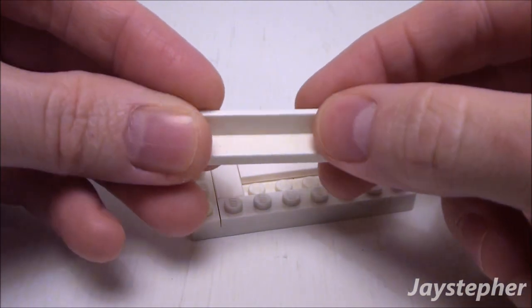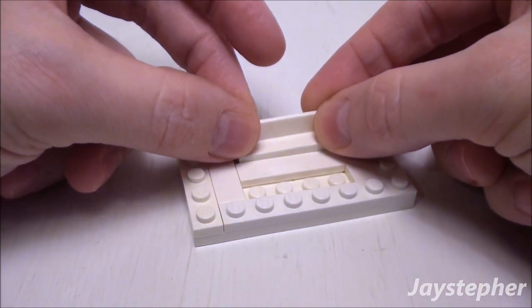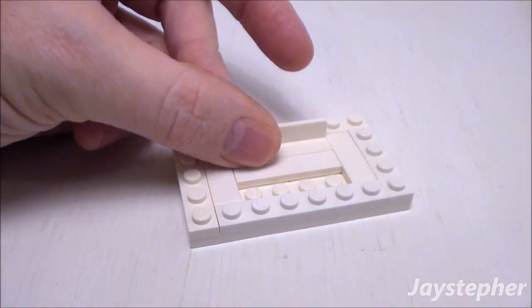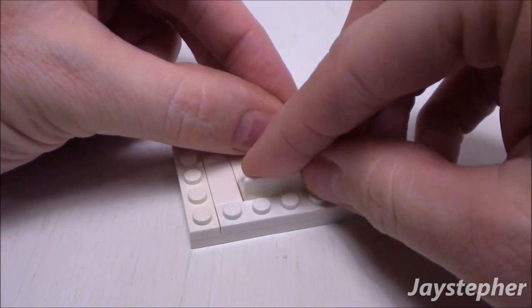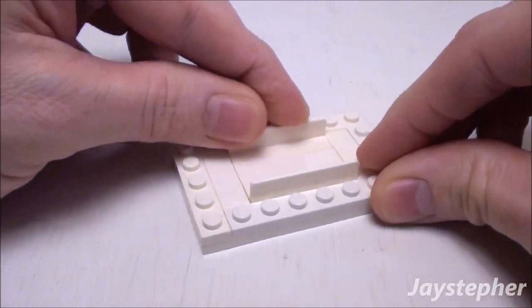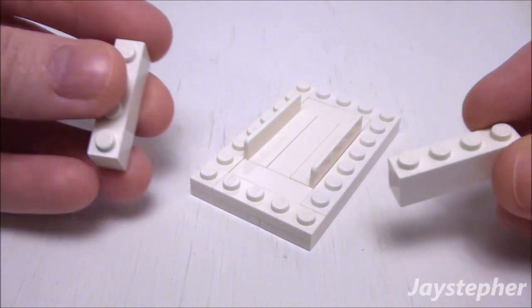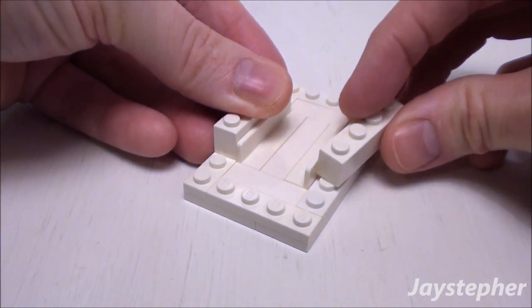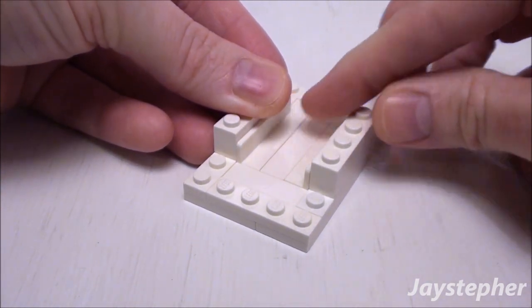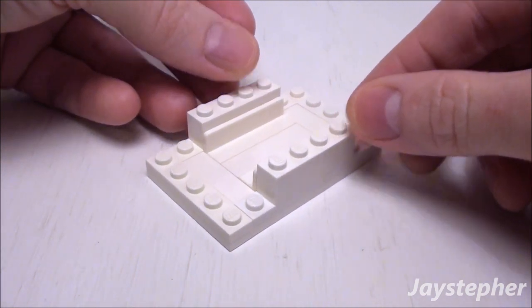Now use two 1 by 4 wall elements. Let's place one in the top void and one in the bottom void. Now take two 1 by 4 bricks and place one on the left and one on the right of our wall elements. These are going to be the sides of the tub.